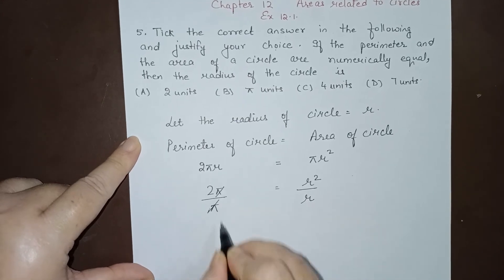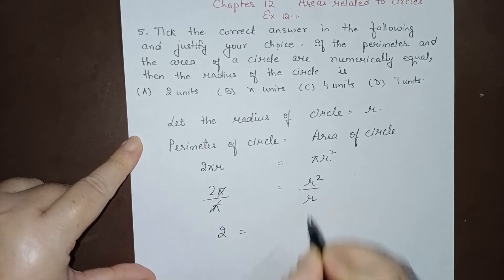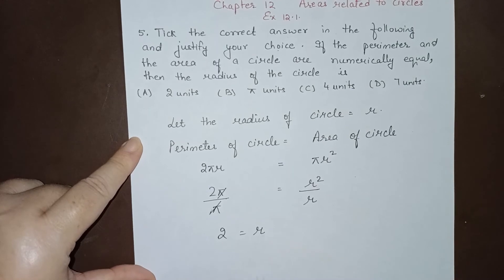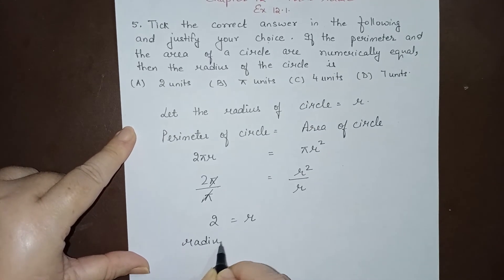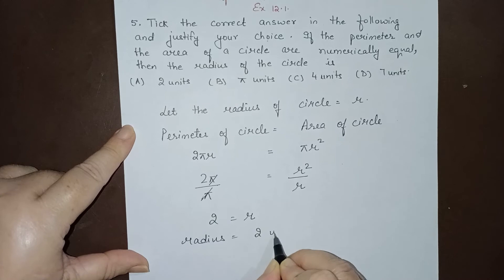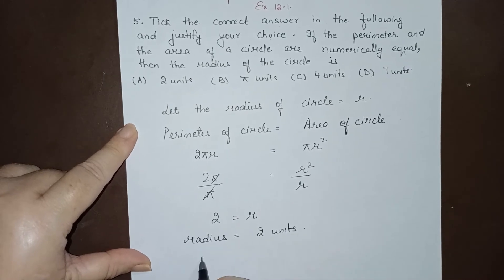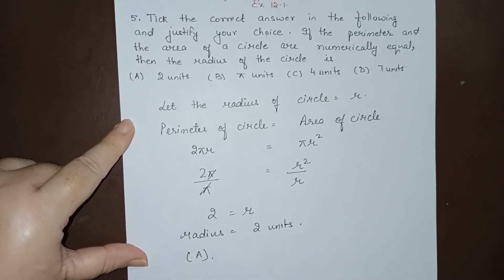So π goes with π, and from here r² divided by r will be r. So the radius equals 2 units. So part A is the answer. Thank you.